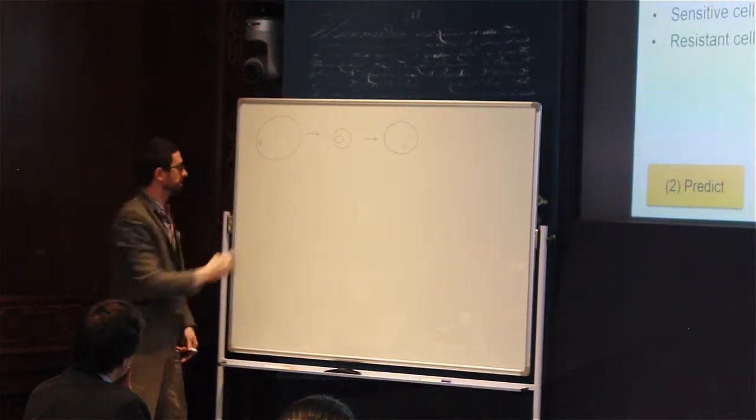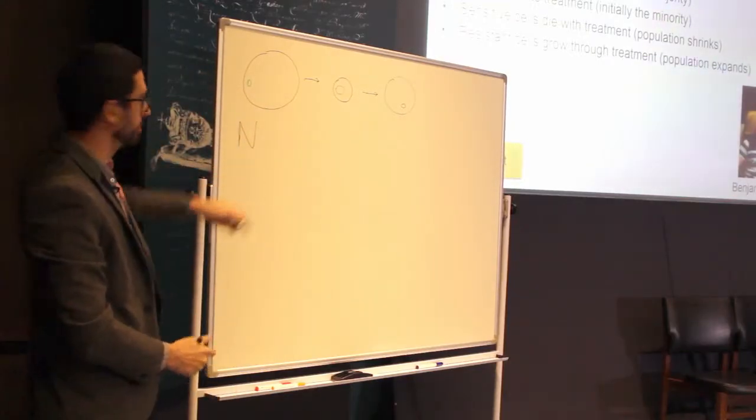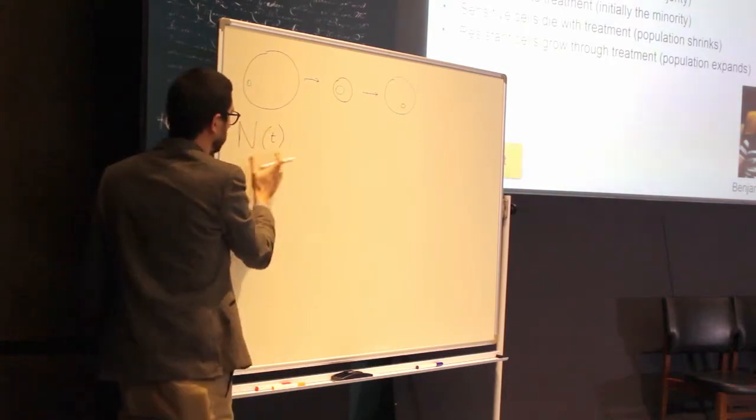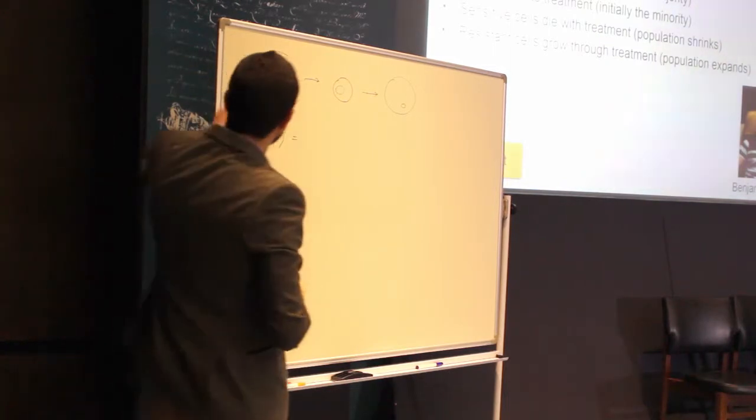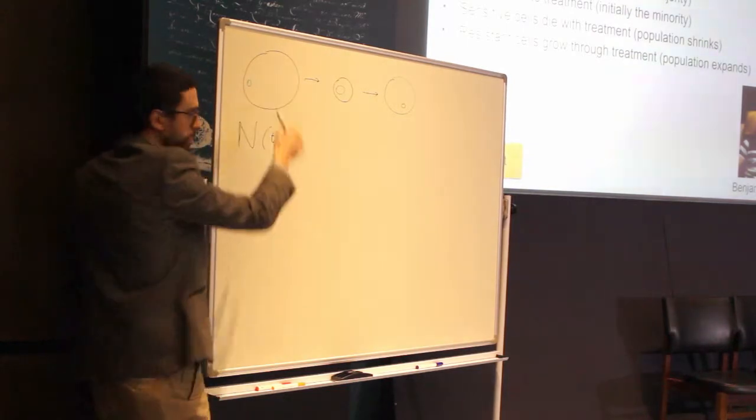The population of cells changes over time. So the population of cells is N. We have N total cells. And this N, this number changes over time. So it depends on time. Well, this total population depends on the dynamics of these two groups of cells.